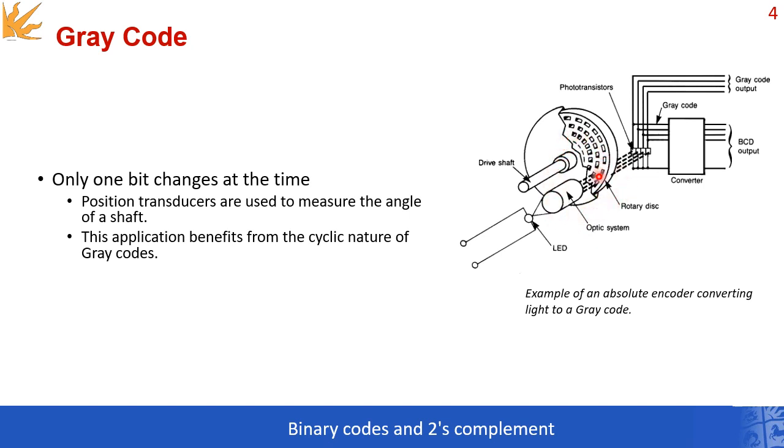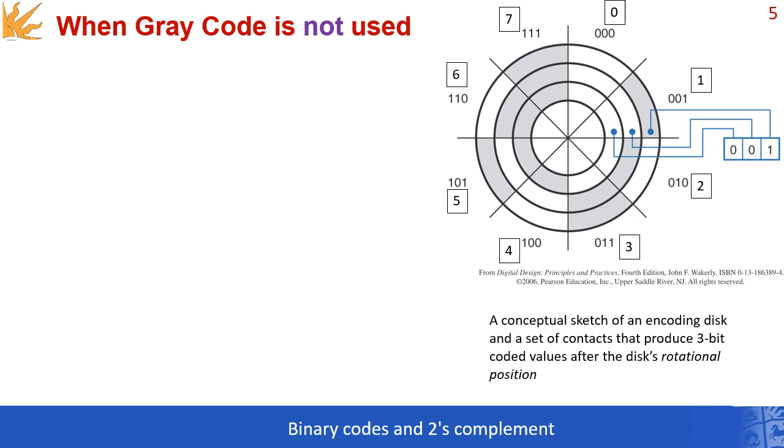This application benefits from the cyclic nature of gray codes. After a full cycle, you return back to the same code. Things will become more clear when we focus on more concrete examples. This is a conceptual sketch of an encoding disk and a set of contacts that produce 3-bit coded values after the disk's rotational position.